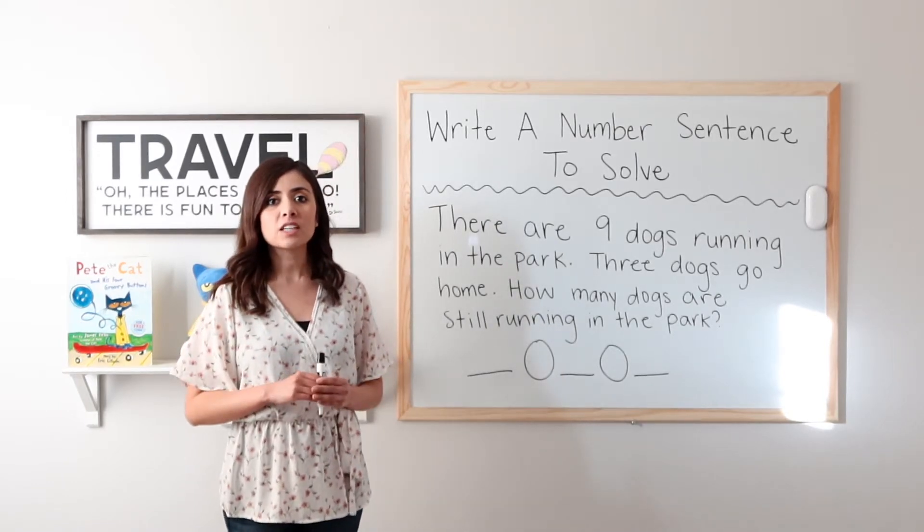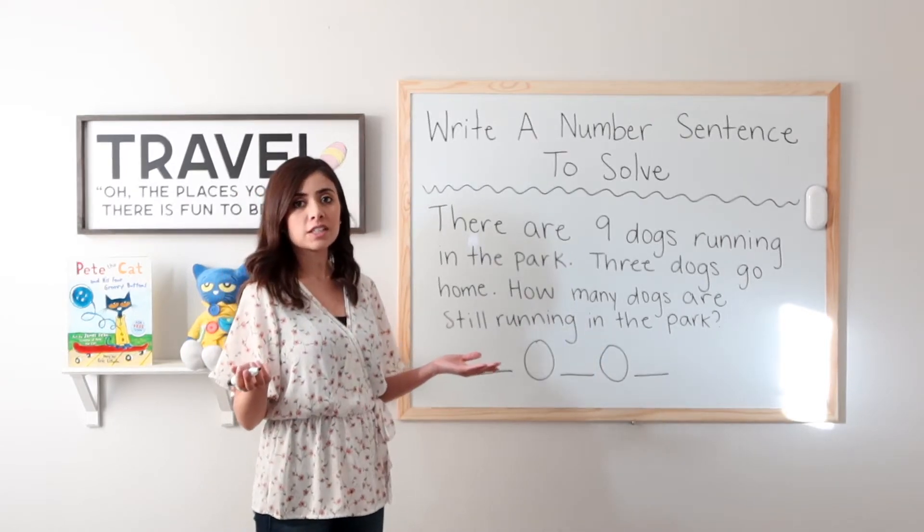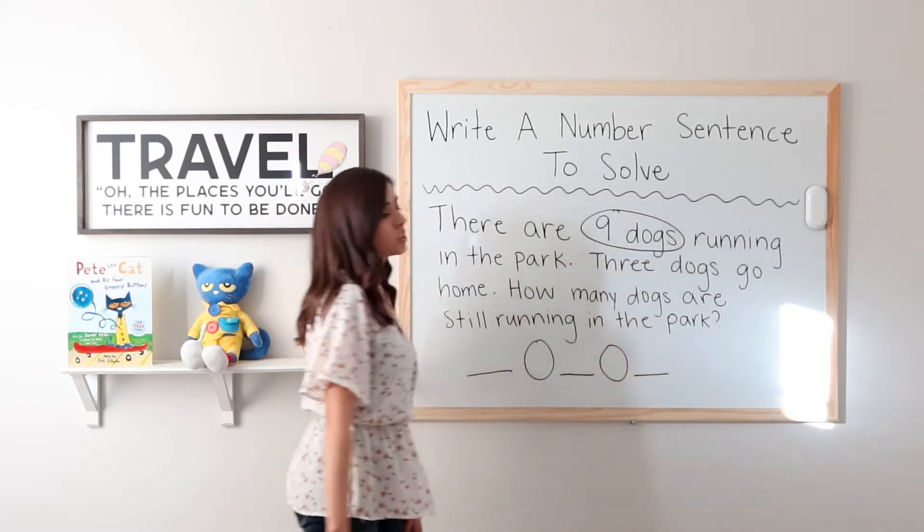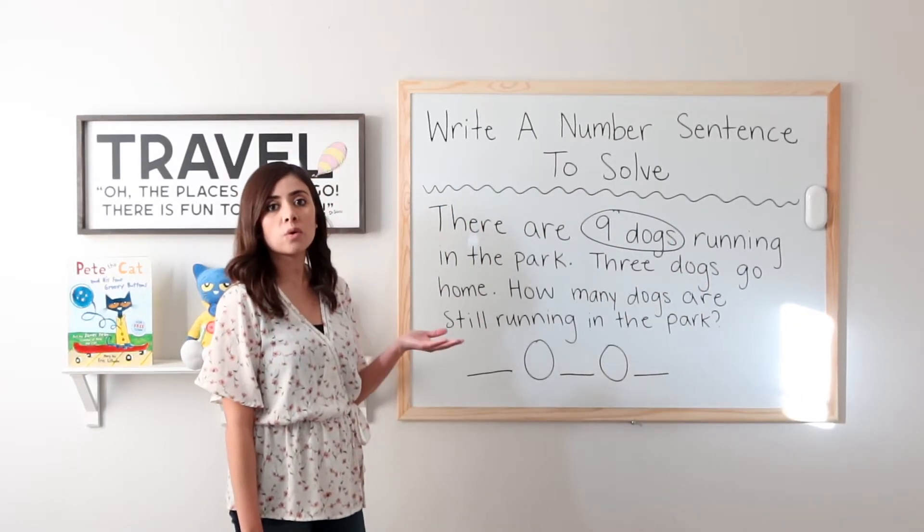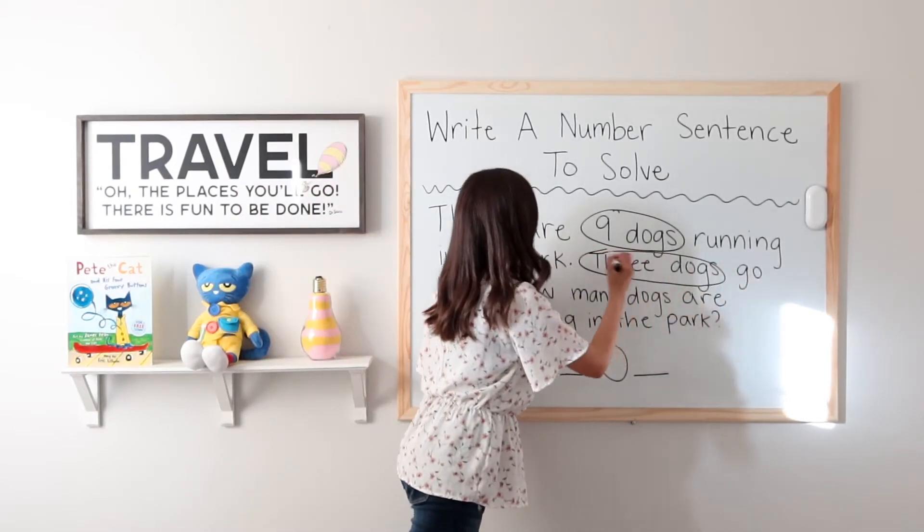Very good. Second, we will circle what we already know. I know that how many dogs are running in the park? Nine. Nine dogs. Let's go ahead and circle that. How many dogs go home? Three. Three dogs.